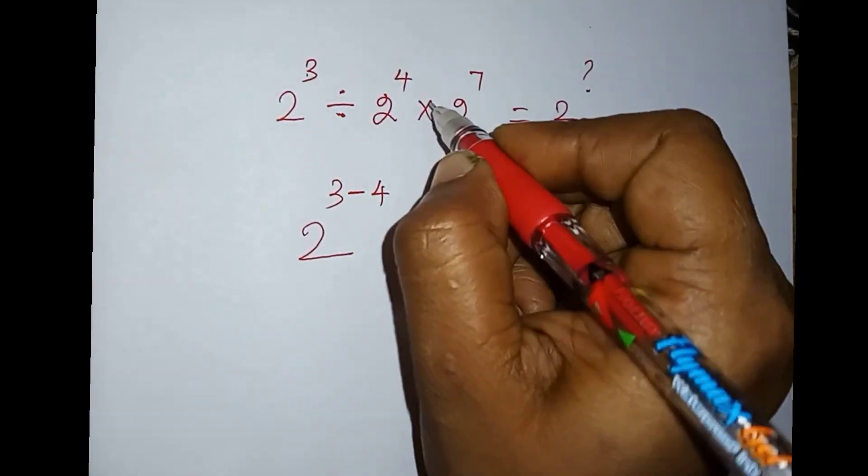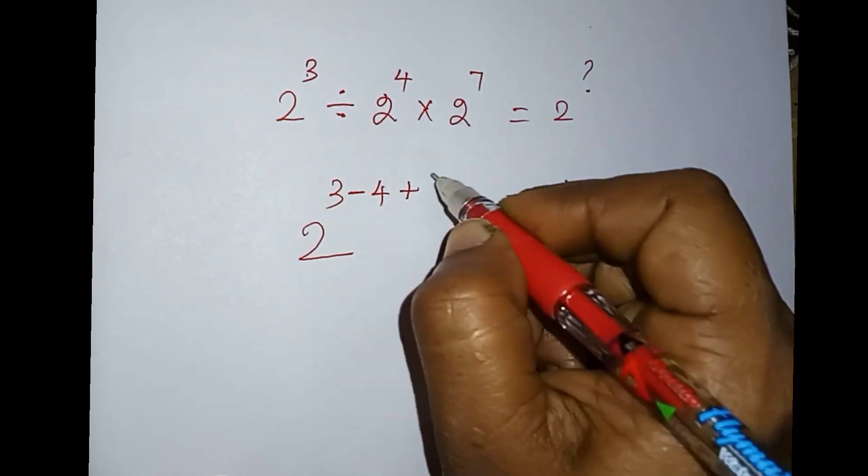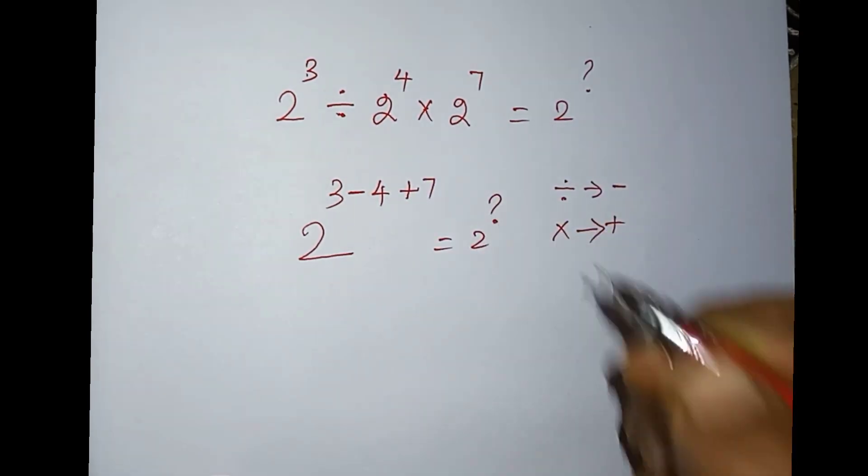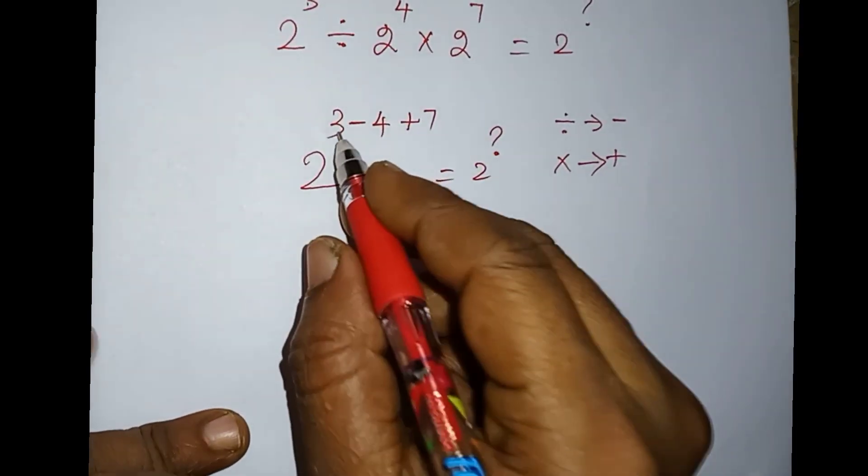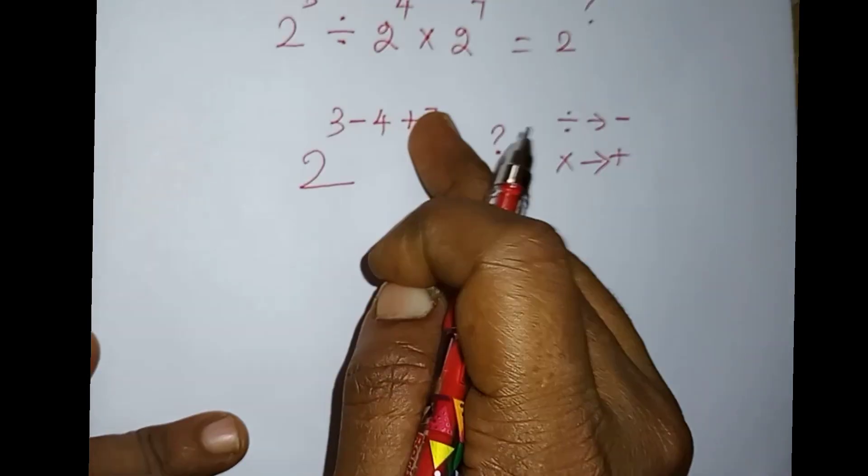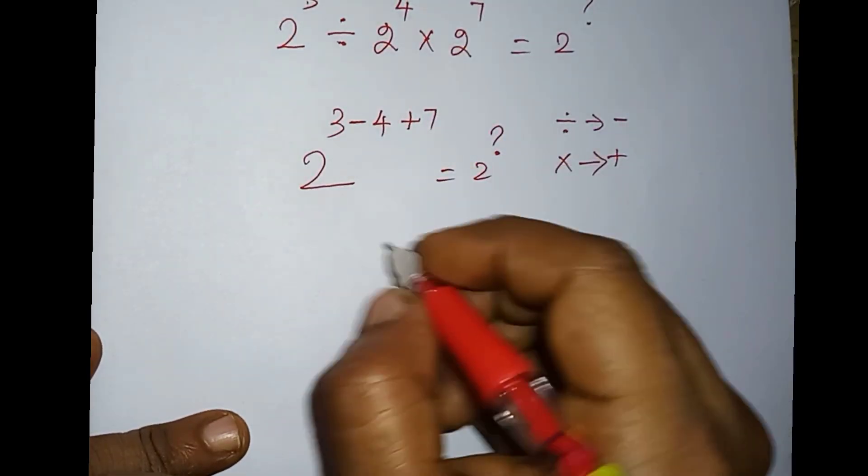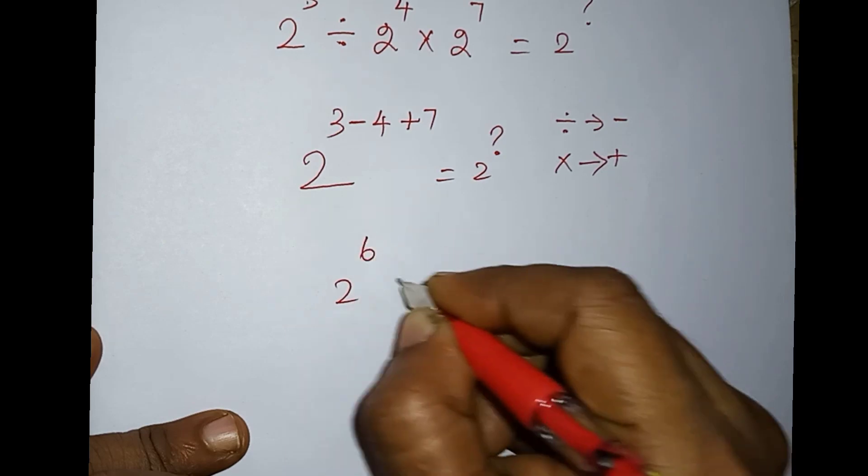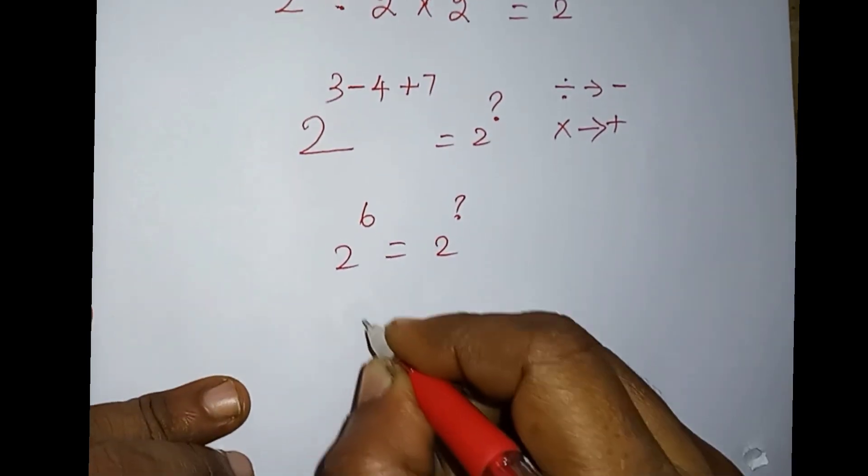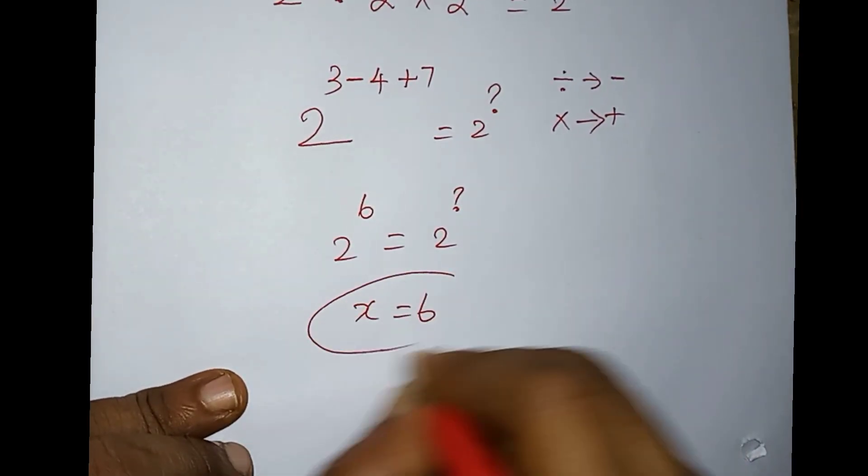The exponents are minus 4 and plus 8. So we have 2 power 3 minus 4 plus 8, which equals 2 power 7. Therefore 2 power 7 equals 2 power 7.